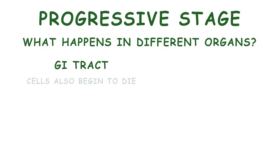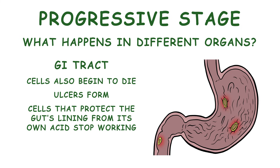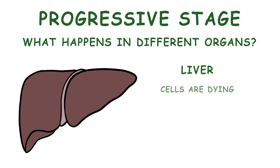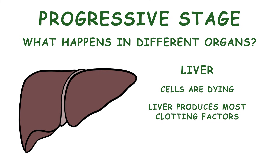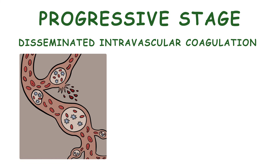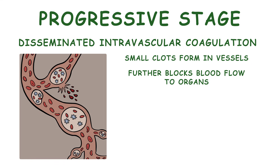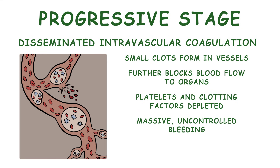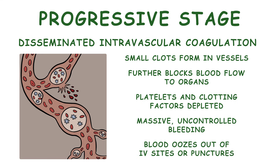In the GI tract, cells also begin to die. Ulcers form as the cells that protect the gut's lining from its own acid stop working, resulting in massive gastrointestinal bleeding. Because the liver's cells are also dying, and the liver produces most clotting factors, clotting doesn't work well. There is also disseminated intravascular coagulation — small clots form in vessels, further blocking blood flow to organs. These clots deplete the body's platelets and clotting factors, resulting in massive and uncontrolled bleeding, with blood oozing out of IV sites or punctures.